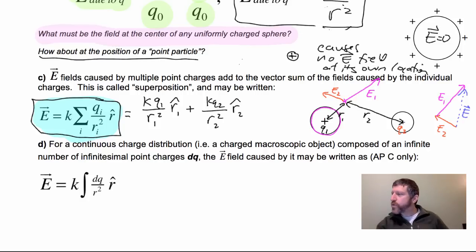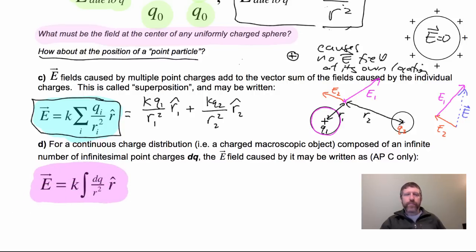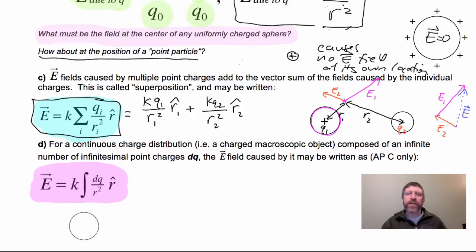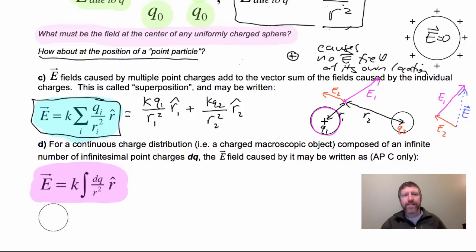If you have a continuous charge distribution — a whole object with charge distributed through it — and it's not spherically symmetrical, you have to integrate: add up an infinite number of infinitesimal fields. This is only required in AP Physics C, and we'll do that later.